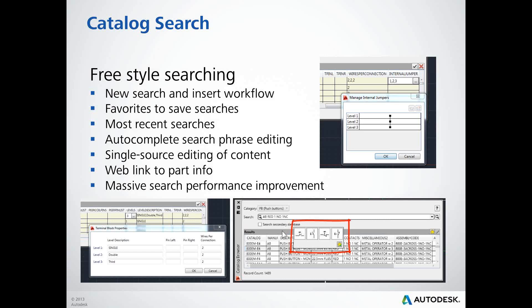The new version also provides a second workflow. Previously you had to start from inserting a component and then doing a catalog lookup. With the new version, you can start from the catalog browser, select the part number, and the symbol you want to insert will appear — you can select the desired orientation, style, and insert it into your drawing. It really gives you a second alternative for inserting components.